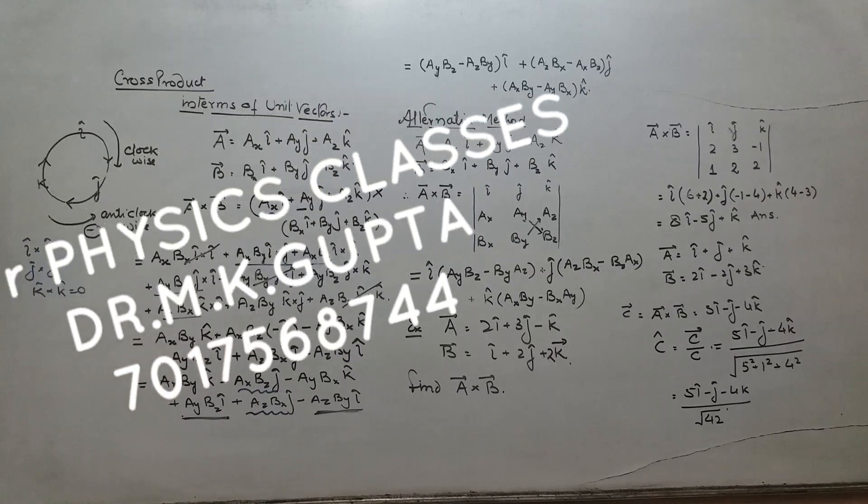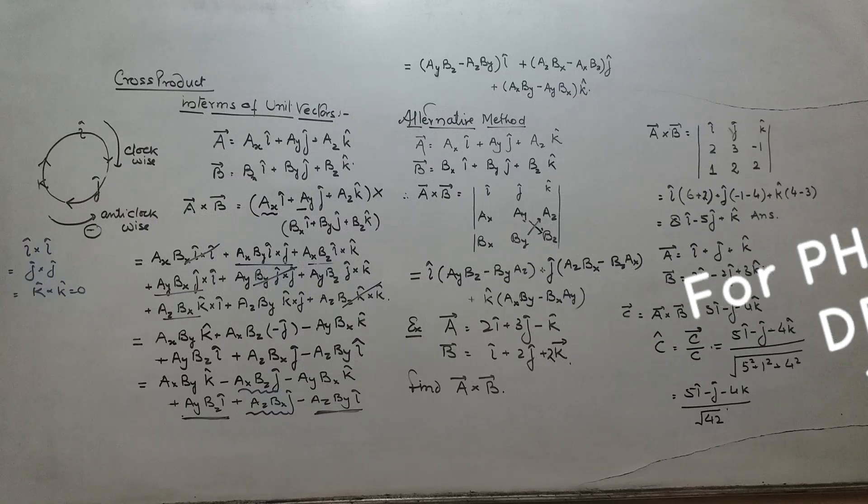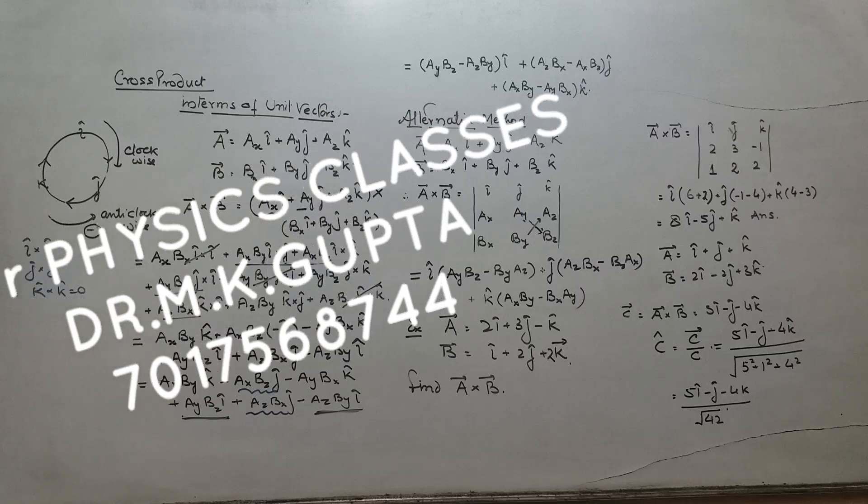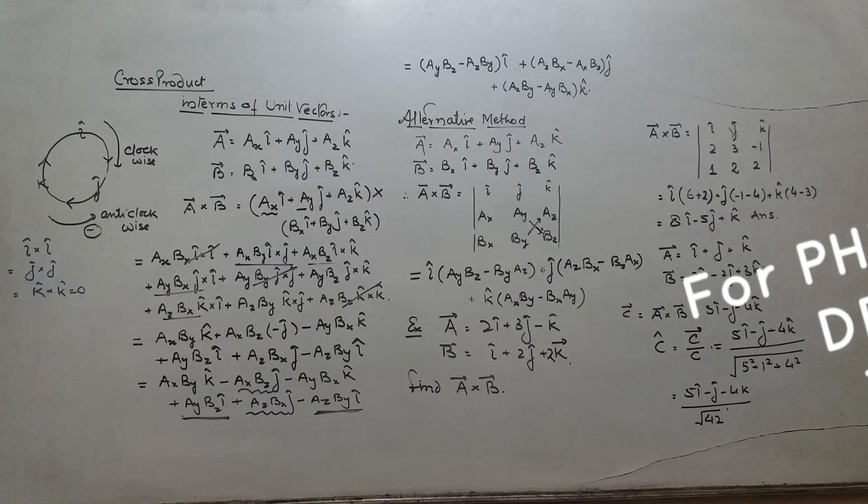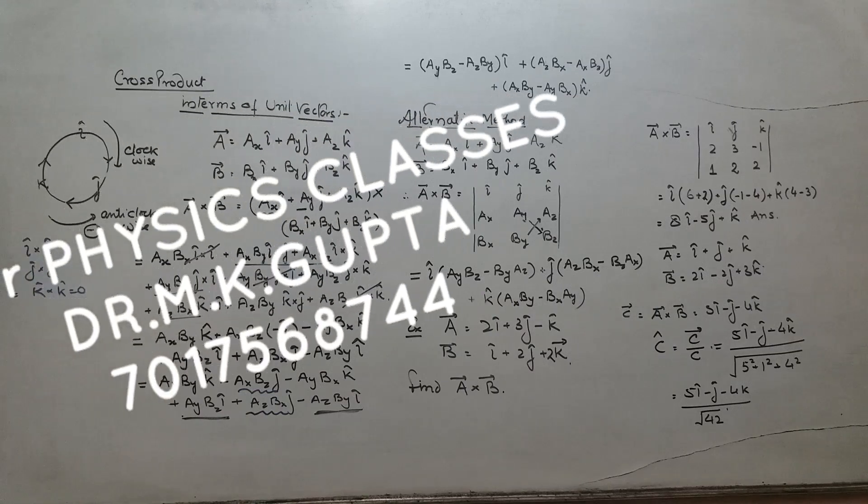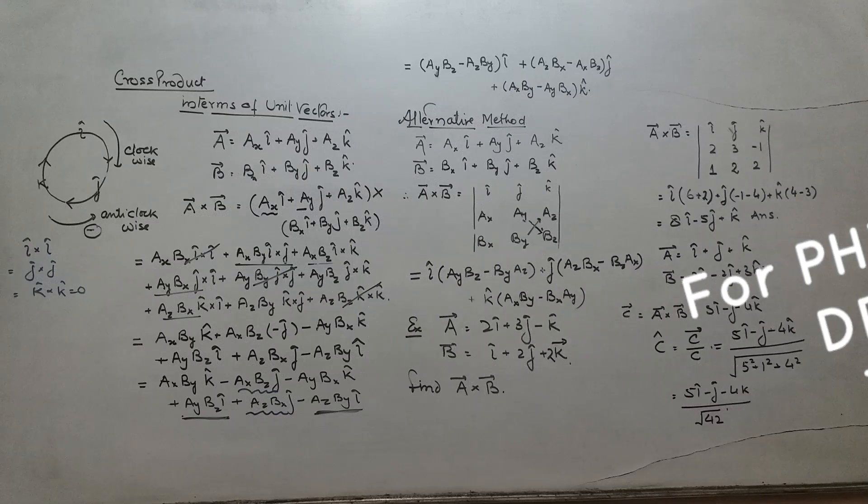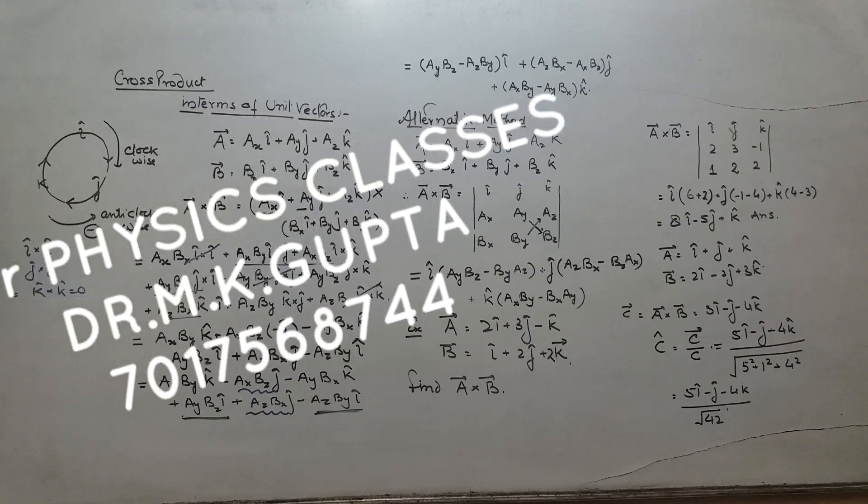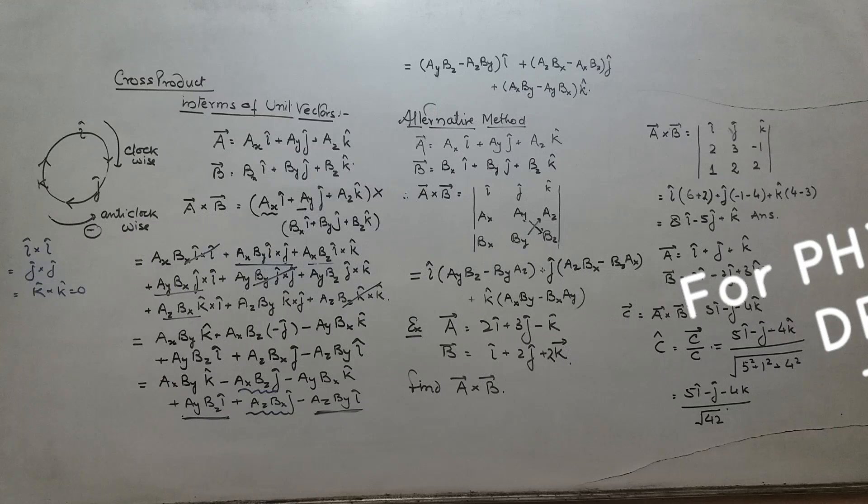So following this rule, we have calculated a vector cross b vector. The result is coming out, a vector cross b vector equals to a_y b_z minus a_z b_y into i cap plus a_z b_x minus a_x b_z into j cap plus a_x b_y minus a_y b_x into k cap.